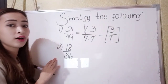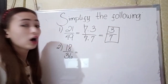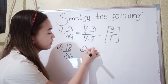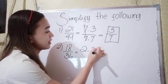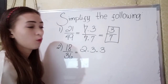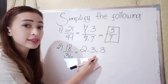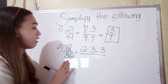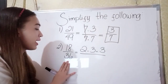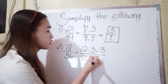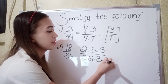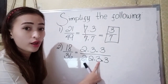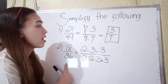In number 2, we have 18 over 36. So what are the factors of 18? It could be 2 times 3 times 3. Because 2 times 3 is 6, and 6 times 3 is 18. What are the factors of 36? So it could be 2 times 2 times 3 times 3. Because 2 times 2 is 4, times 3 is 12, times 3 is 36.